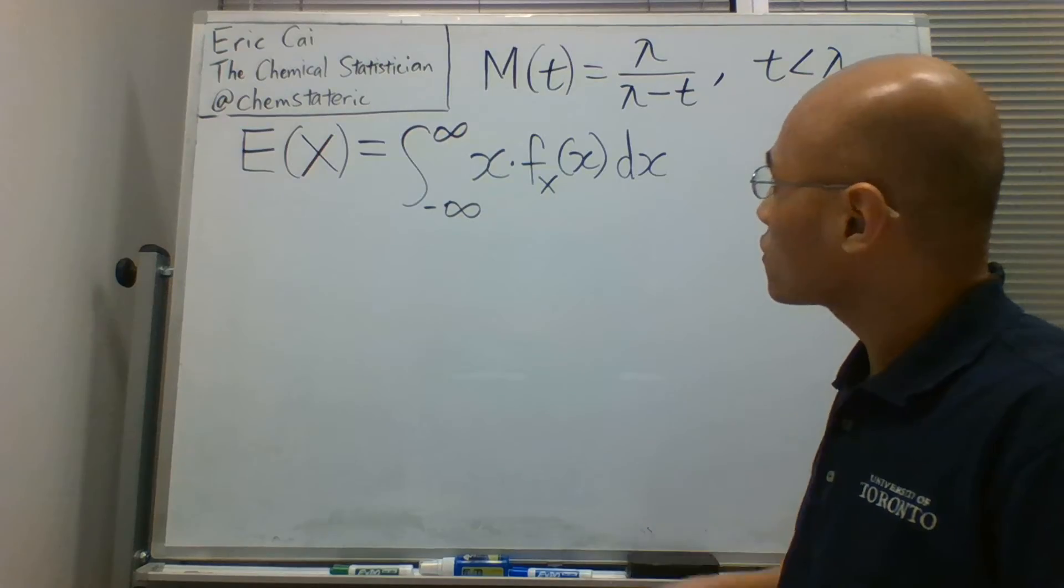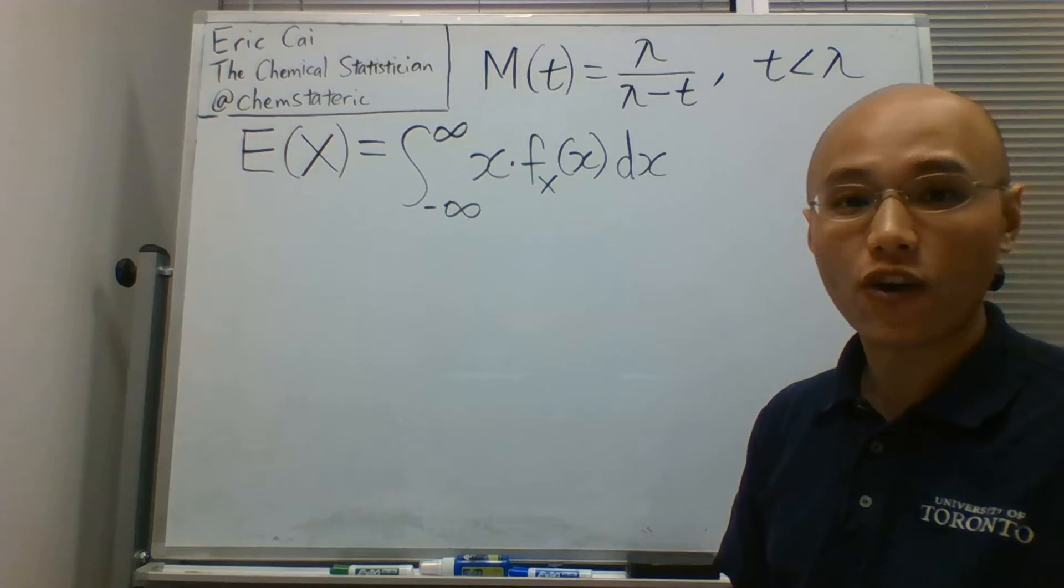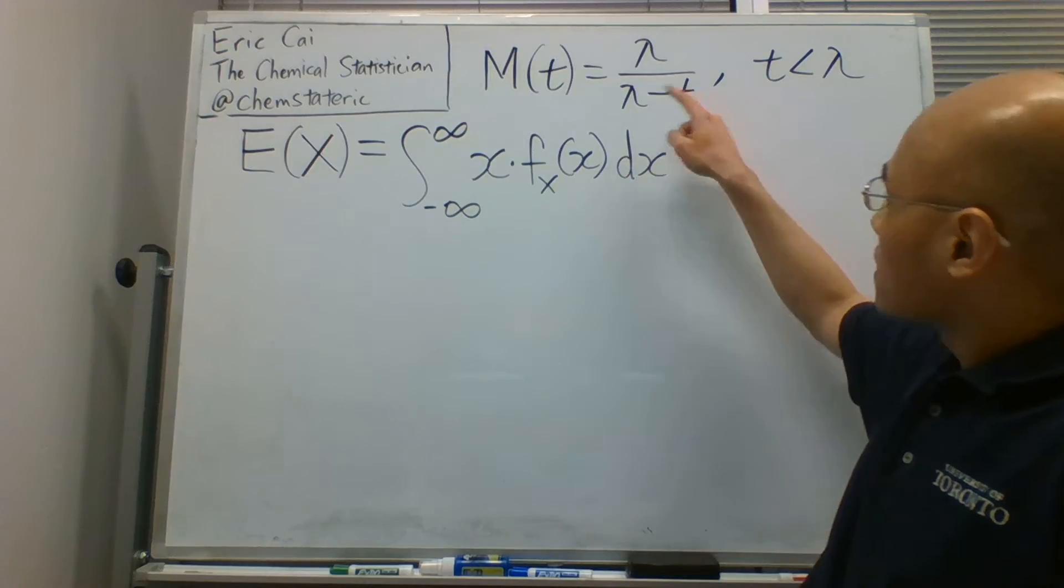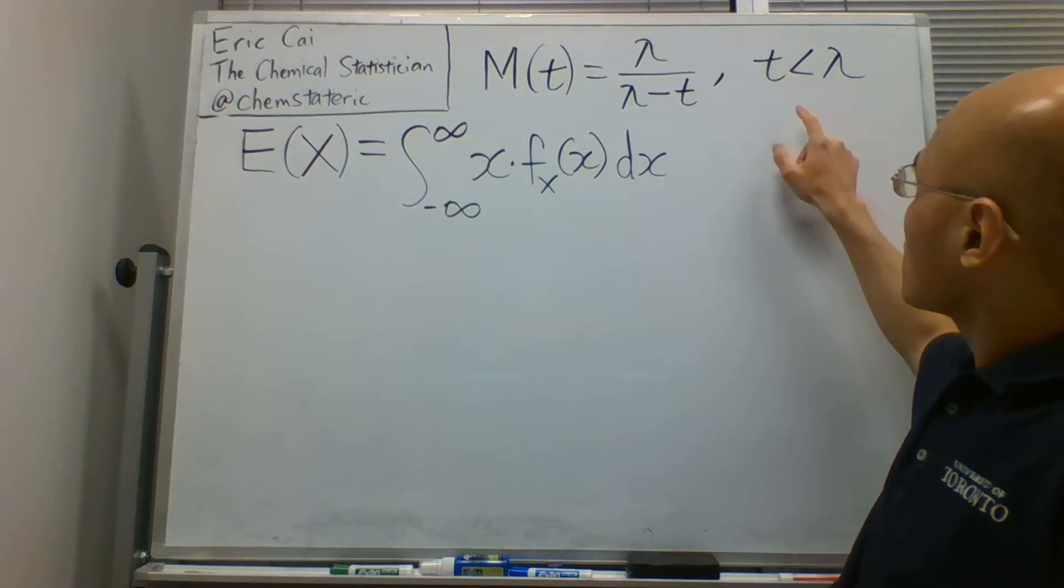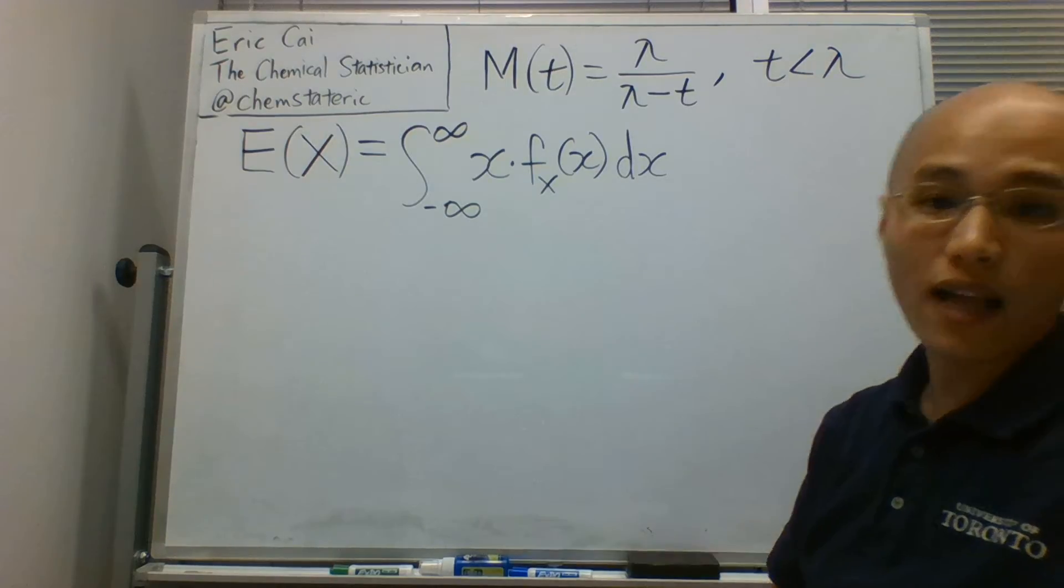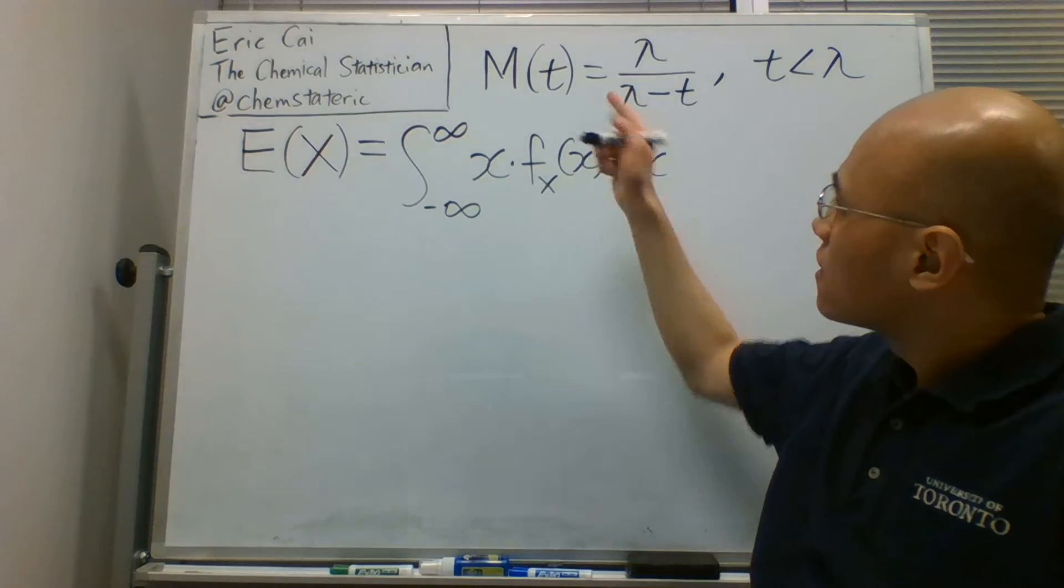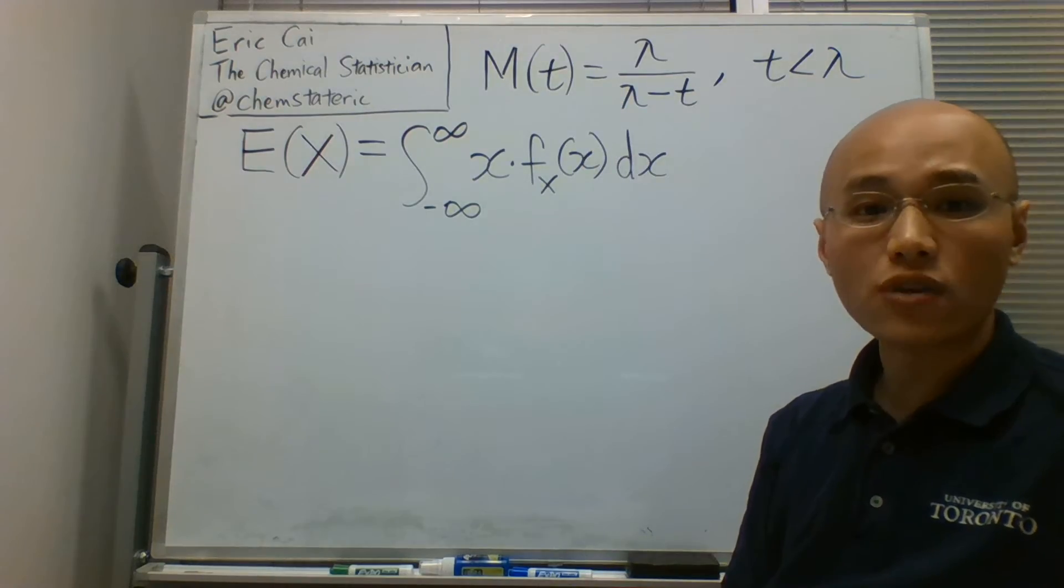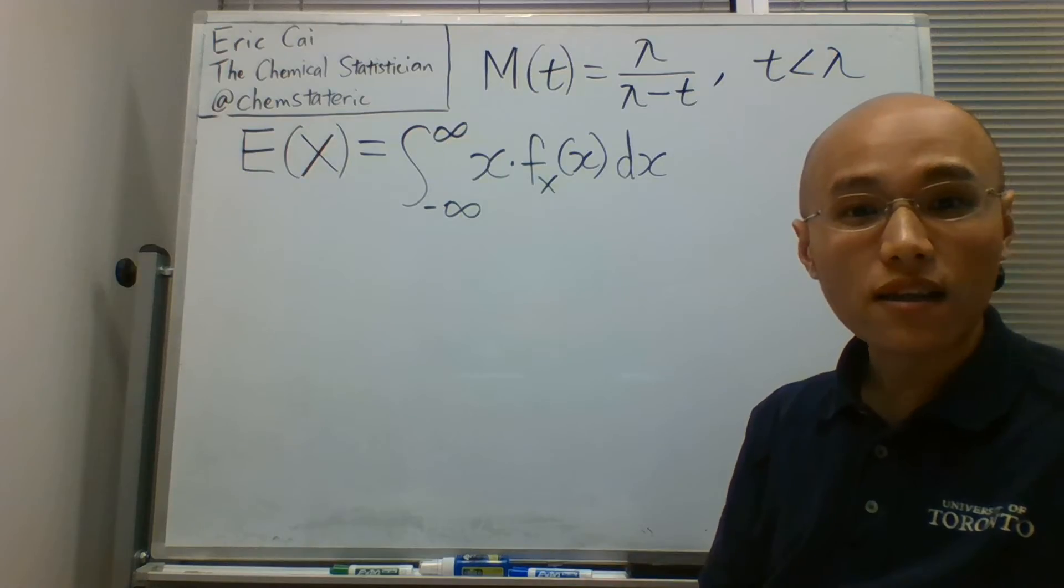In an earlier video, I showed that the moment generating function for an exponential random variable is lambda divided by lambda minus t with the condition that t is less than lambda. So let's apply this moment generating function in obtaining the expected value.